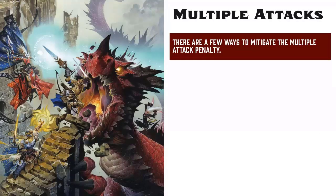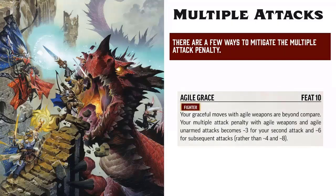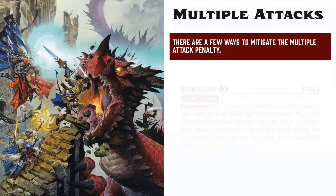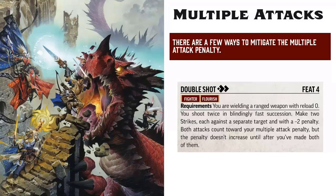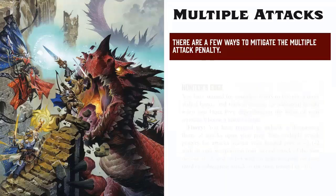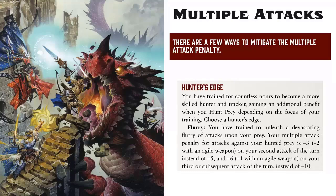There are a few ways to mitigate the Multiple Attack Penalty in addition to using an Agile Weapon. Agile Grace is a 10th level Fighter feat that lowers the penalty for using an Agile Weapon even further to negative 3 for the second attack and negative 6 for the third. Double Shot lets an Archer shoot twice at different targets for a negative 2 penalty each, and does not increase the multiple attack penalty until after the second shot. And Rangers with the Flurry Hunter's Edge make multiple attacks at negative 3 and negative 6, or negative 2 and negative 4 if they're using Agile Weapons.